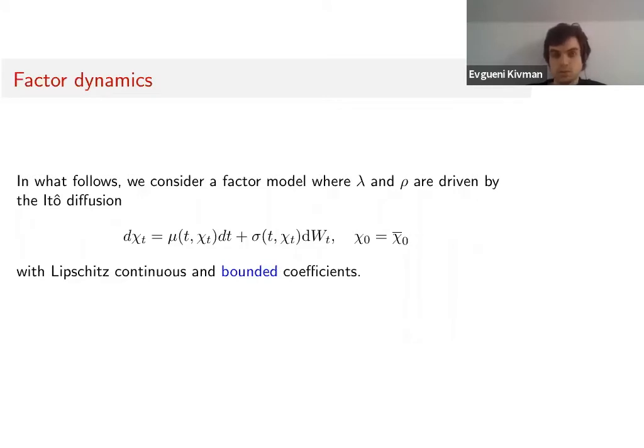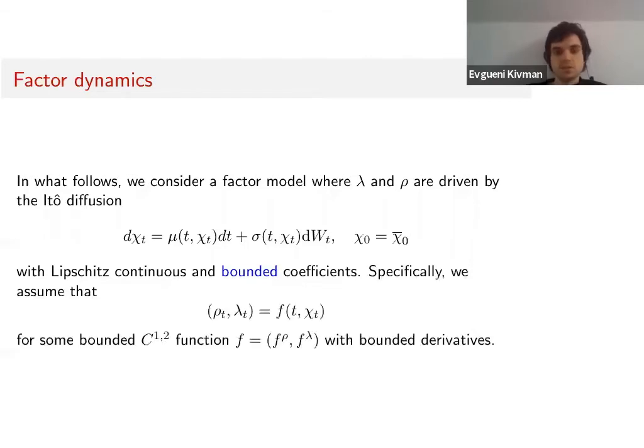In our case, we want to impose an additional condition: that random parameters λ and ρ have to be driven by a mutual diffusion. So λ is the market risk aversion parameter and ρ the resilience rate. We introduce this diffusion with Lipschitz continuous and bounded coefficients. They are probably needed to get the results we want.